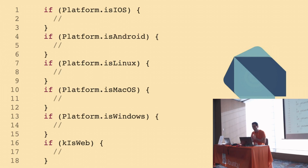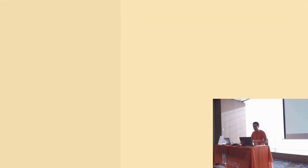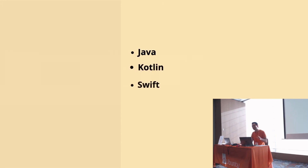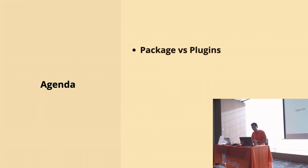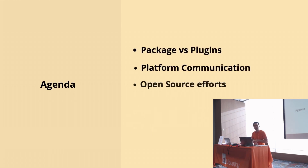Whether it works — running your code and having if-statements everywhere — is not a great approach as the project grows and you want to share your code with the community. You have different languages to support on each platform: maybe Java, Kotlin, Swift, C, C++, Objective-C, and so on. There are many cases where you need to touch the native code at some point and communicate with Flutter as well.